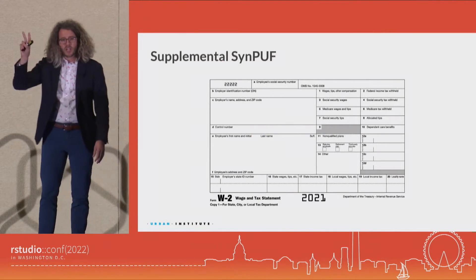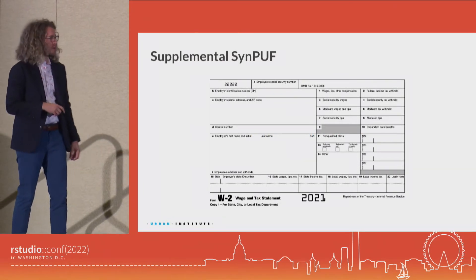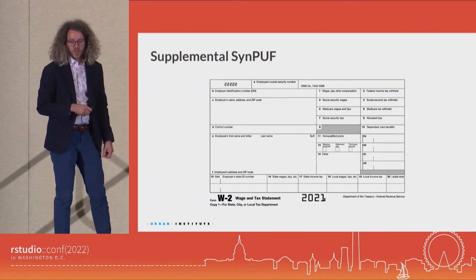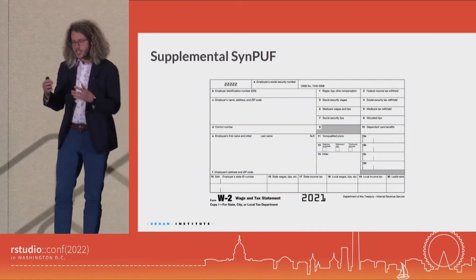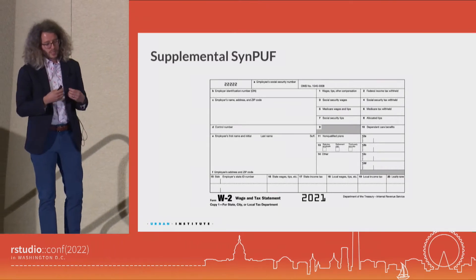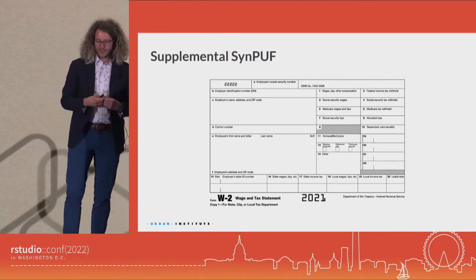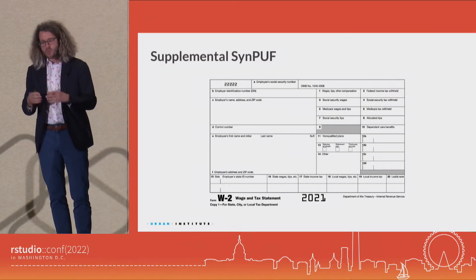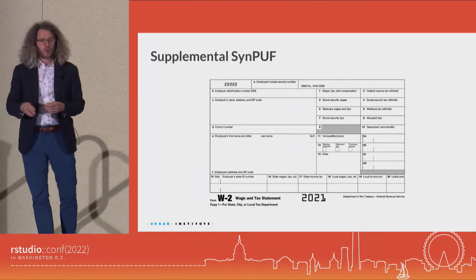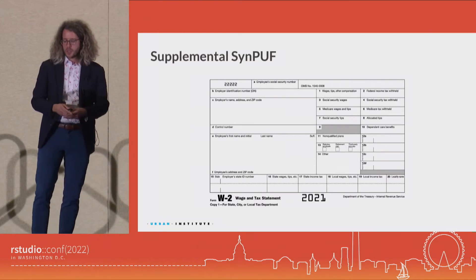We've worked with the IRS to create two — kind of one-and-a-half — data sets; the second one's still a bit of a work in progress. The first one's called the Supplemental SYNPUF — PUF for Public Use File. It's a collection of information that the IRS has about individuals who have not filed taxes and do not have an obligation to file taxes. It's a novel data set that's going to be very helpful for understanding the very low parts of the income distribution, and the tax economists I work with are pretty excited about it.